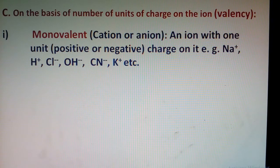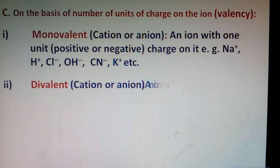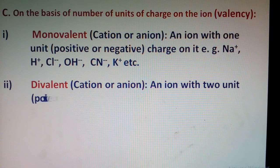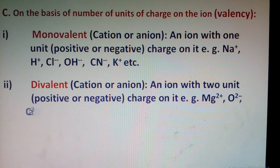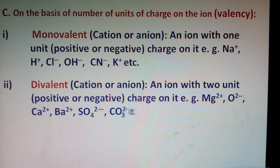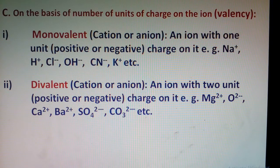Divalent ions: those ions which have two units of either positive or negative charge. Examples include magnesium 2+, oxygen 2-, calcium 2+, sulfate, carbonate, etc.